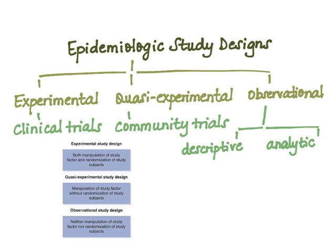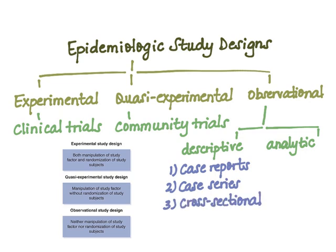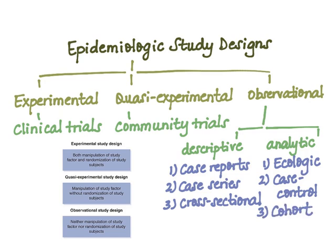Here I've pulled up an image that compares and contrasts these three broad categories. Experimental study designs, such as clinical trials, involve both manipulation of the study factor and randomization of study subjects. Quasi-experimental studies involve manipulation of the study factor but without randomization — an example being community trials. Observational study designs involve neither manipulation of the study factor nor randomization of study subjects. Descriptive and analytic studies can each be further subcategorized into three study designs.